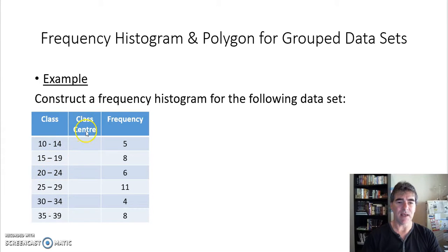Now our class center is, as it suggests, the center of each class or the middle of each class. So we need to work out how we find the middle of two numbers, and to do that we halve the total. So total means we add them together and then we're going to halve them.